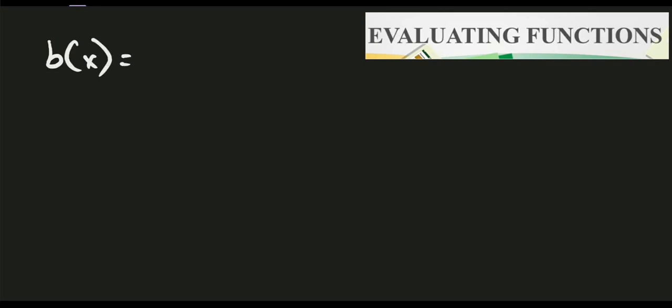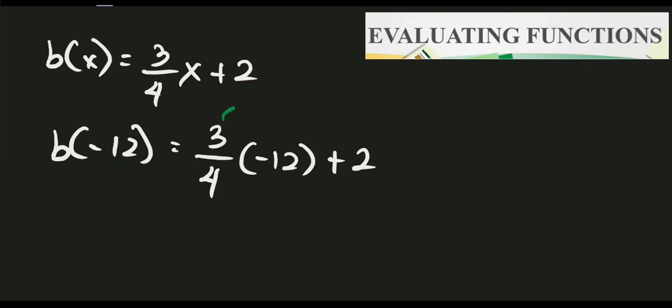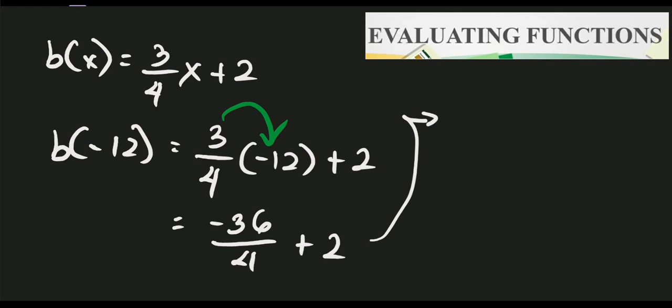Let's try another problem. We have b of x equals three-fourths x plus 2. Let's find b of negative 12. Same procedure — replace x with negative 12 and simplify. So it gives us three-fourths times negative 12 plus 2. Multiply: 3 times negative 12 is negative 36, over 4, plus 2. Negative 36 over 4 equals negative 9 plus 2, which is negative 7.